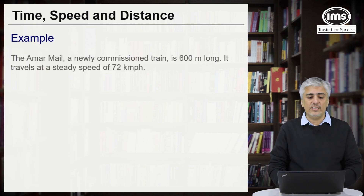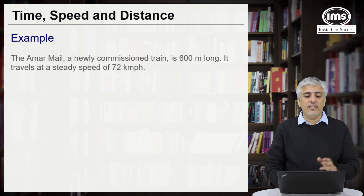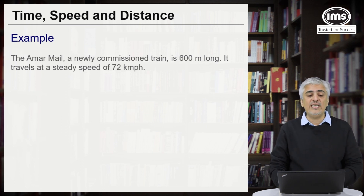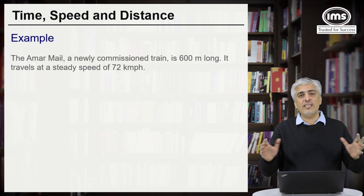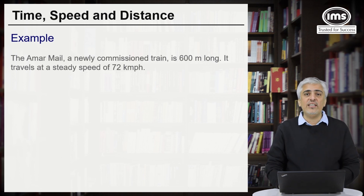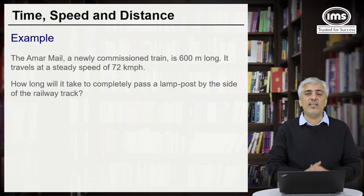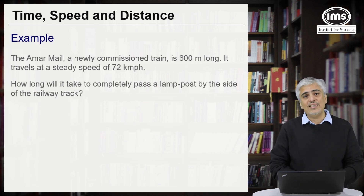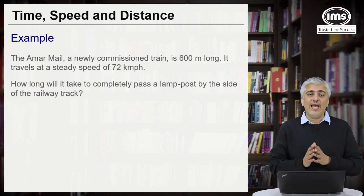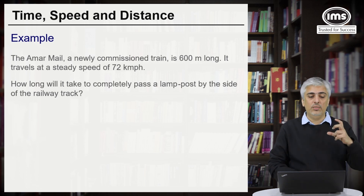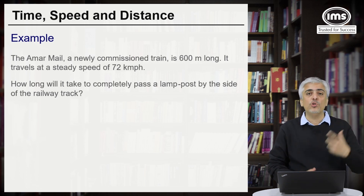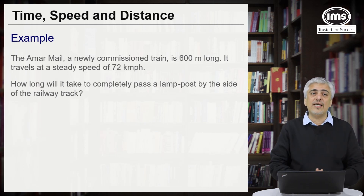Let us take the first example. The Amarmail, a newly commissioned train, is 600 meters long and travels at a steady speed of 72 km per hour. How long will it take to completely pass a lamppost by the side of the railway track? Now, let us understand this concept well. The train has to cross the lamppost which is there on the side of the railway track — it has to cross that.